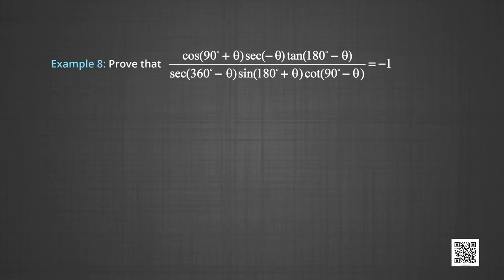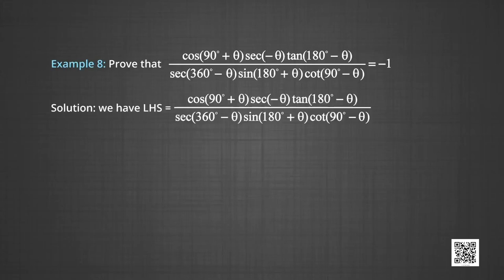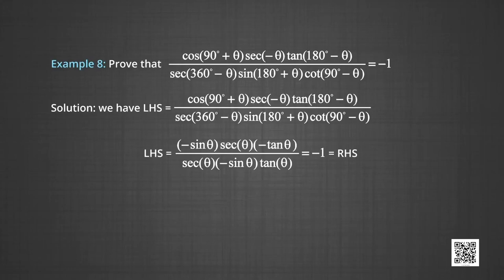In example 8, we prove that [cos(90° + θ) · sec(−θ) · tan(180° − θ)] / [sec(360° − θ) · sin(180° + θ) · cot(90° − θ)] = −1. The left-hand side simplifies to [−sin θ · sec θ · (−tan θ)] / [sec θ · (−sin θ) · tan θ], which on cancellation gives −1, equal to the right-hand side.